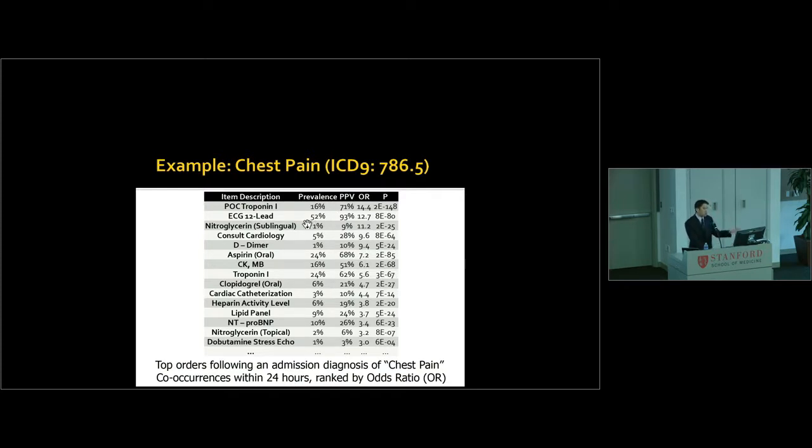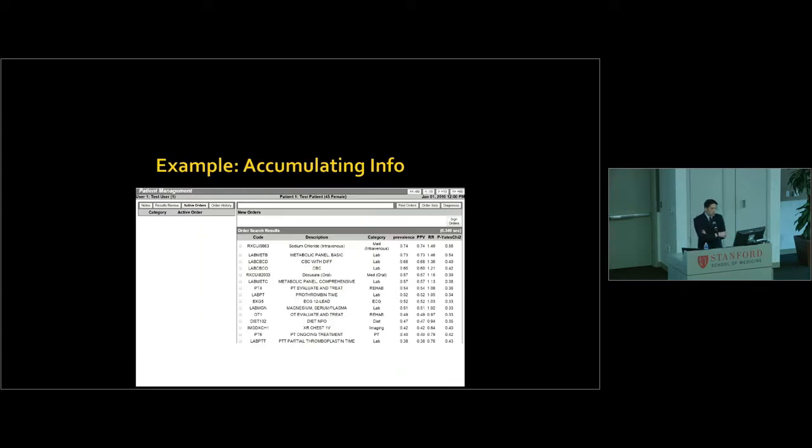Now, if your only goal is to just predict what the doctor is likely to want to order next, this is actually a pretty good list already. Although you will also notice a lot of the things that were just common overall, like checking a CBC and metabolic panel, are also common if you're admitted for chest pain. So what might be more interesting is if we were to sort by something like, say, odds ratio or p-value or relative risk. In this case now, what rises at the top of the list is check a point-of-care troponin. That makes sense. The blood test, see if you're having a heart attack. And you'll notice that the positive predictive value is actually less than EKG, but is so much higher relative to the baseline prevalence, it suggests that there's something much more specifically relevant about this order for this clinical context.